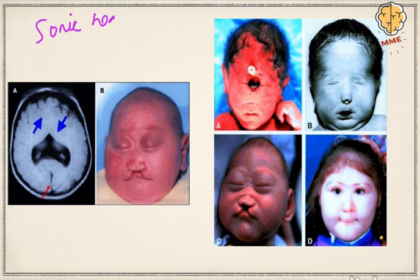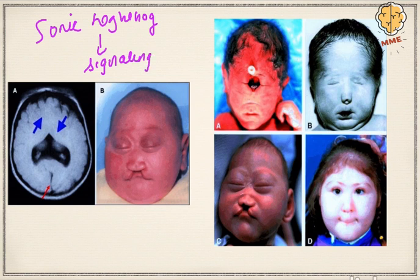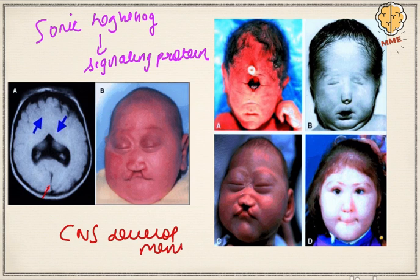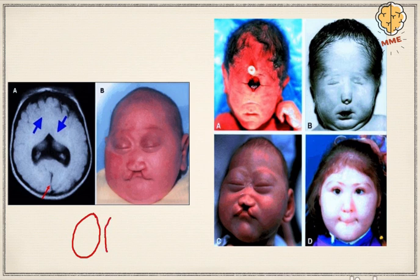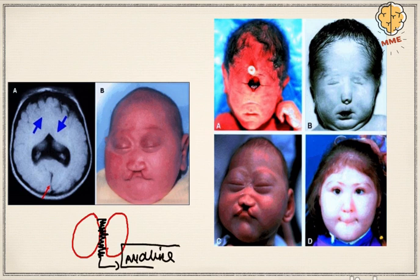Sonic hedgehog is a signaling protein and plays a key role in CNS development. Normally, sonic hedgehog forms the midline between the two hemispheres of the brain so that both hemispheres are connected. If the sonic hedgehog gene is absent, it causes the pathology of holoprosencephaly.